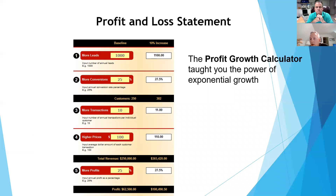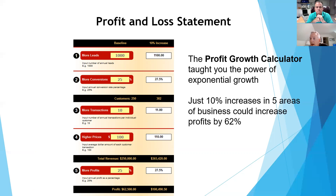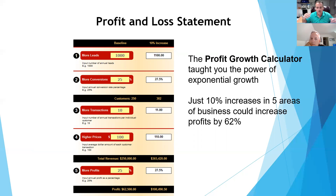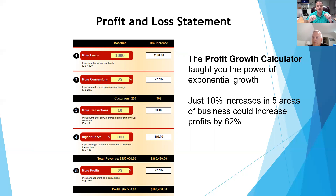We talked about this before — the profit growth calculator shows that just a 10% increase in five main areas of your business could increase your profits by 62%. That's more leads, more conversions, more transactions, higher prices, more profits. So a 10% increase in each of those five areas leads to a 62% increase in profit. So many people think growing a business requires big leaps, but it's really small incremental differences that matter.